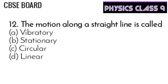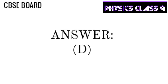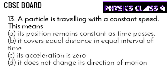Question 12: The motion along a straight line is called vibratory, stationary, circular, or linear. Any motion in a straight line is called linear motion, so option D is correct.